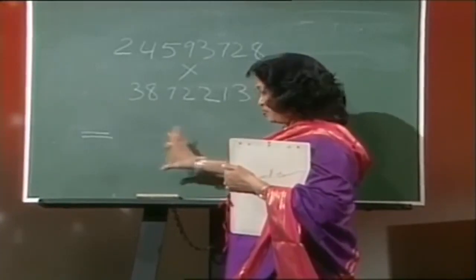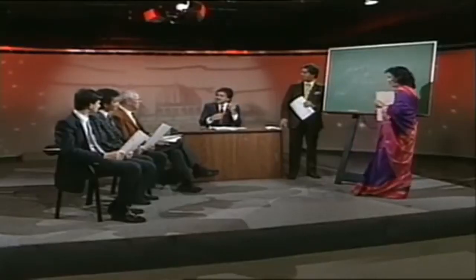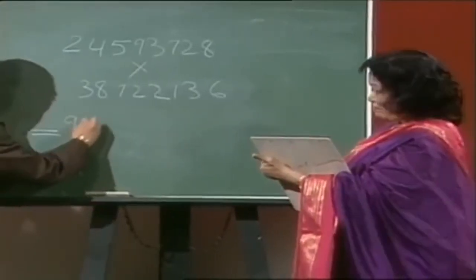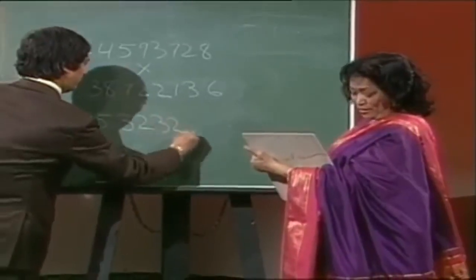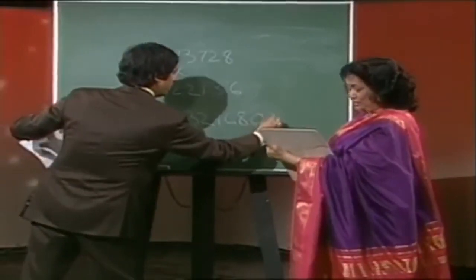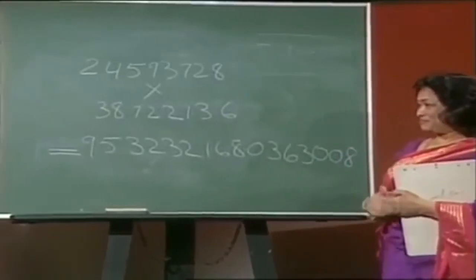Let's go the conventional route this way. Why don't we do it differently — what would the panel prefer? We should start from the left. Okay, I got the answer already. The answer is 9 5 2 3 2 1 6 8 0 3 6 3 0 0 8. I wouldn't believe that if it was right. It's exactly correct — absolutely correct.